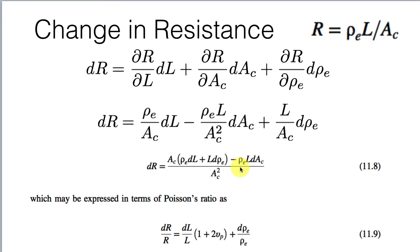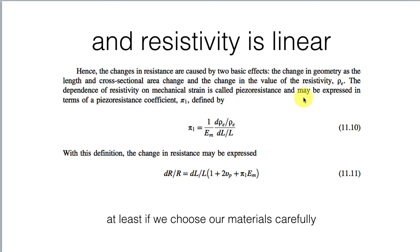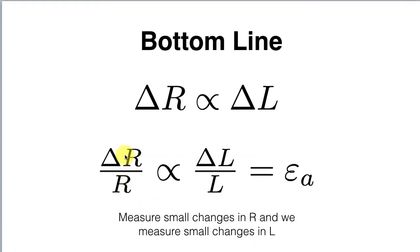If we combine the three effects, we get the equation from Figliola and Beasley. It can be simplified if we know Poisson's ratio, which relates the cross-sectional area change to the length change. We don't need to worry too much about that if the resistivity is linear and we choose our materials carefully. The bottom line is that the change in resistance is proportional to the change in length, which is proportional to the strain. If we can measure small changes in resistance, we can infer those small changes in length.